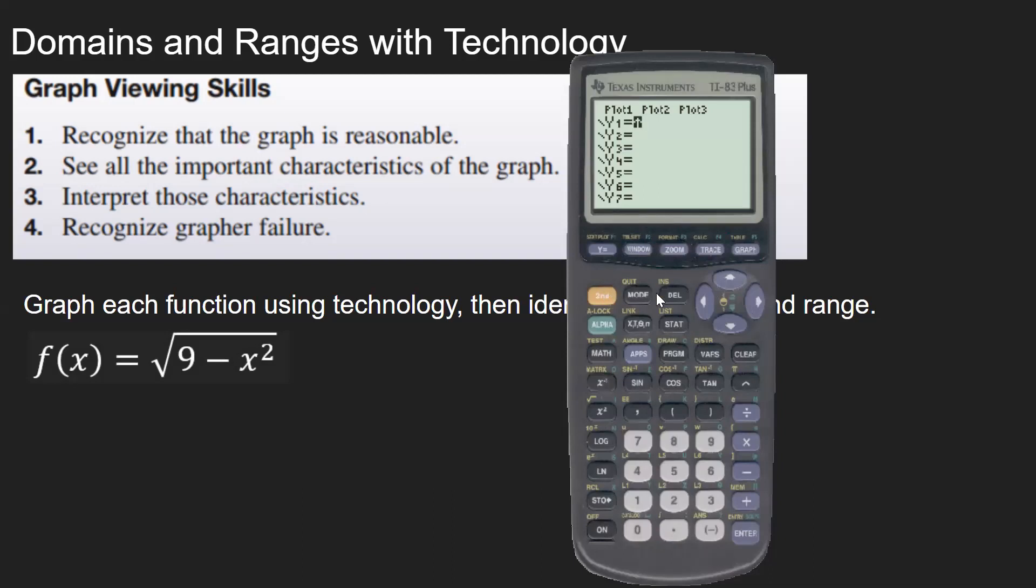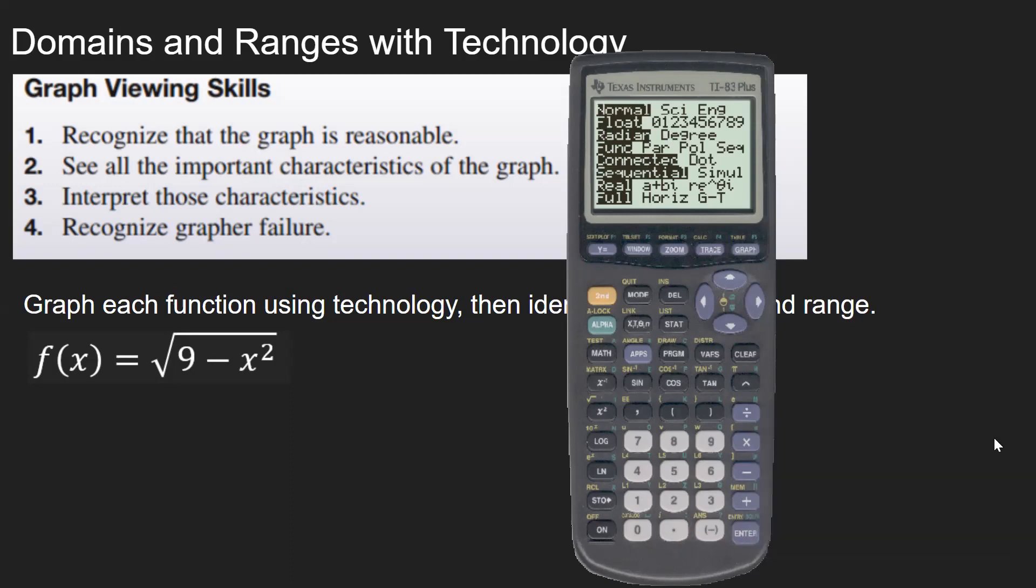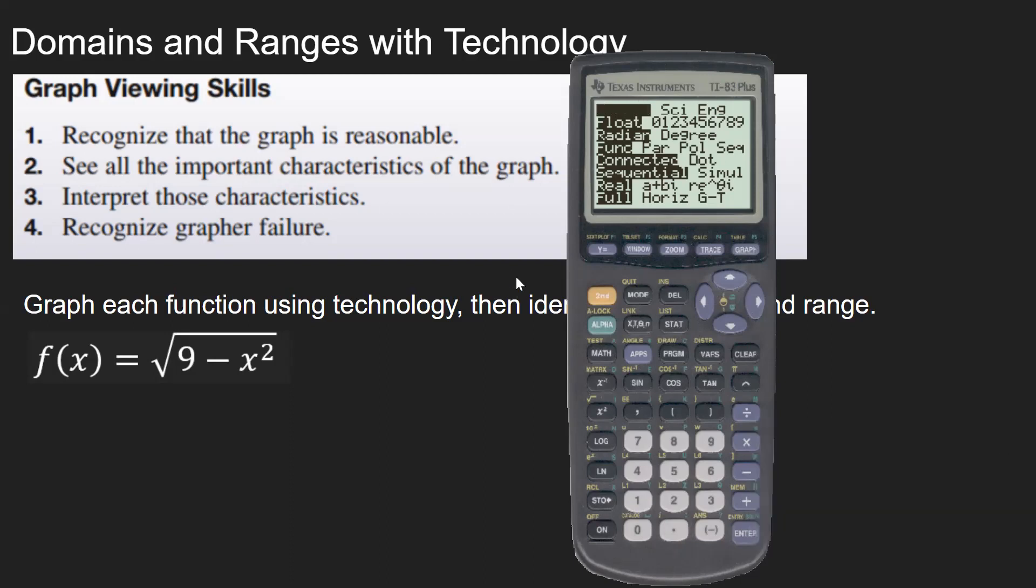So I'm going to put this on. Just make sure your modes are lined up, you're in radian mode. And then go to your y equals menu, square root, nine minus x squared, hit enter. And then I always like to hit zoom six for my standard viewing window.